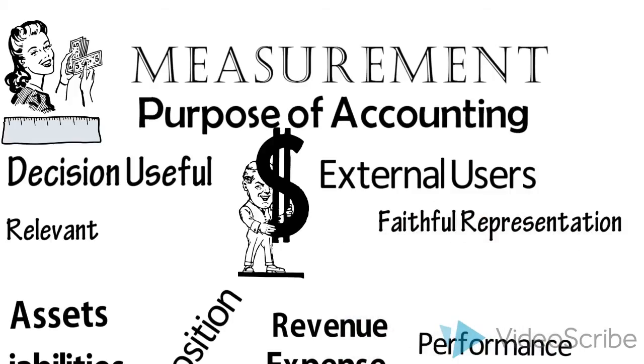Accounting information should be relevant, it should be reliable—or in other words it should faithfully represent the economic reality—it should be understandable, and it should be comparable. We might also argue that accounting information needs to be verifiable.